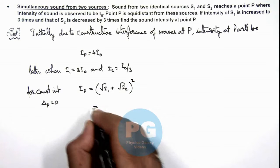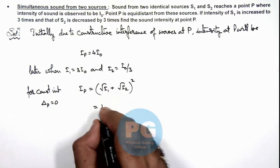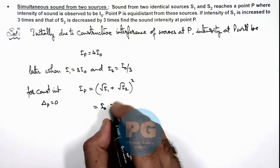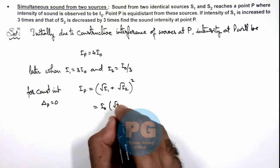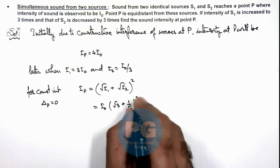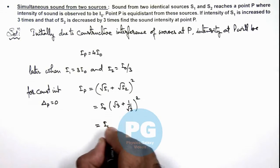So this will be, we'll take I₀ common out, and this will be (√3 + 1/√3)² whole square, that is equal to I₀ multiplied by 3 plus 1/3 plus 2.